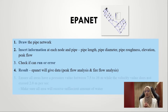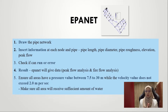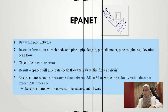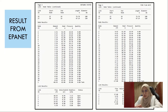From the results, we must check the data one by one to ensure that all areas have a pressure value between 7.5 to 30 meters and the velocity does not exceed 2 meters per second — to ensure all areas receive a sufficient amount of water. This is the result from ePanet. The left one is the result for peak flow analysis and the right one is for fire flow analysis. The parameters provided are head, pressure, velocity, flow, and head loss.